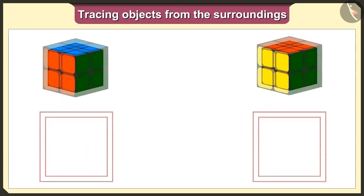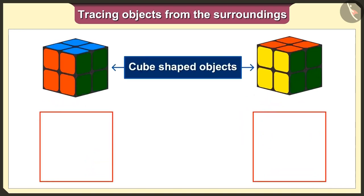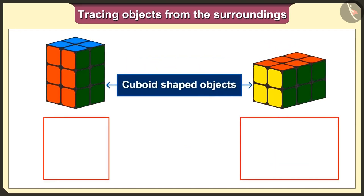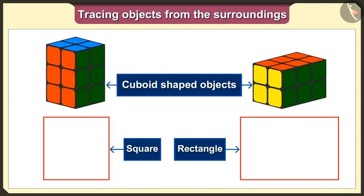Remember that if we keep the cube-shaped toy in any way and trace it, we will always get the square shape. And if we trace the cuboid shape, we will always get either a square or a rectangle shape.